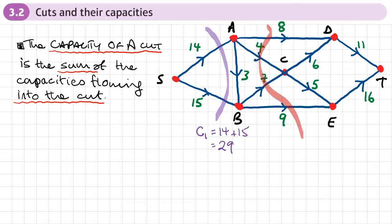If I drew another cut here, I wanted to work out the capacity of this cut. All the flows flowing into it are going to be, let's call this C2, 8 plus 4 plus 7 plus 9. So this has a capacity of 28. If I've done my math right, 8 plus 4 is 12, 12 plus 7 is 19 plus 9, yep, 28.